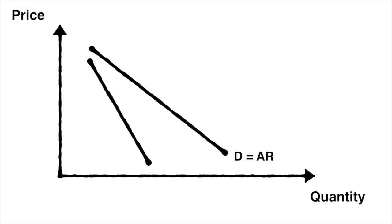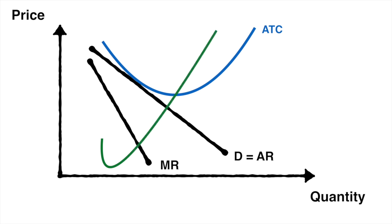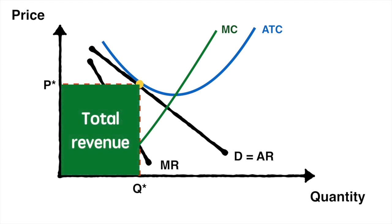The marginal revenue curve is twice as steep as the demand curve. If we include average cost and marginal cost curves for the firm, we should have all the information we need to determine the profit maximizing level of output and price. We find the intersection of MR and MC and drop down to find our profit maximizing quantity. We follow this quantity up to the demand curve to find our price. This allows us to determine our total revenue and total costs. In this case, they are equal to each other.